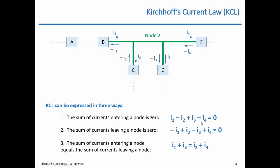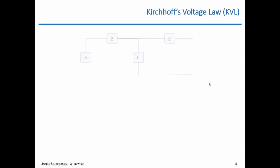That's Kirchhoff's current law. You'll have problems where you have all known currents except one unknown, and you can use KCL to find that unknown. Or you may have multiple unknown currents and multiple nodes, and so you have to write a system of equations to solve for the unknown currents — we will get to that. Kirchhoff's voltage law requires a definition of a loop. Here is a circuit with four circuit elements and two terminals — those circles or dots are terminals where you might connect another circuit or component, but we'll leave those terminals open right now.